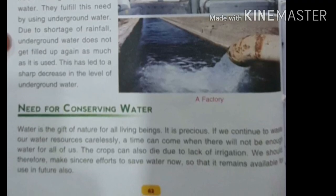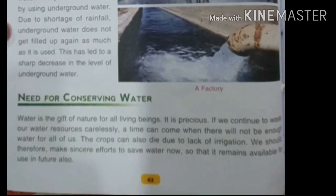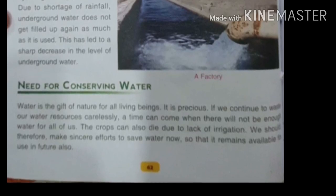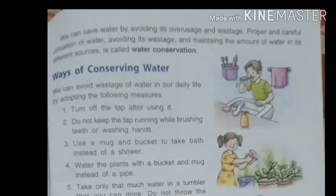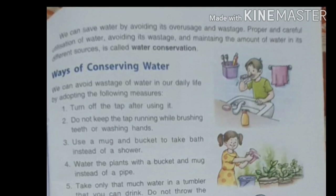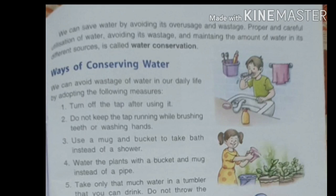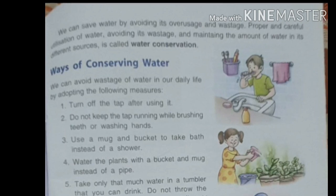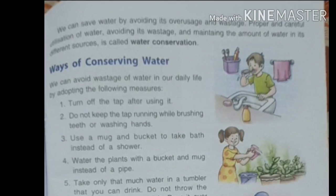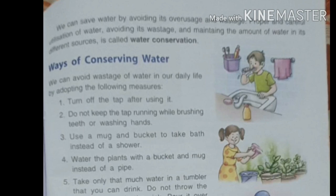Our crops can die due to lack of irrigation, so it is our responsibility to save water now so that it remains available for future use as well. Proper maintaining of the amount of water in different sources is known as water conservation — we use water now but also save it for the future.